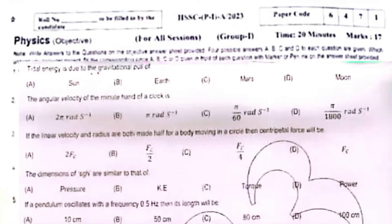Tidal energy is due to the gravitational pull of the moon. The angular velocity of the minute hand of a clock is π over 1800 radian per second.